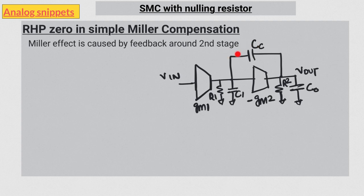But this feedback through the compensation capacitor is a bidirectional feedback, which means there is a feedback as well as a feed forward path. And it is this feed forward path which causes the zero.